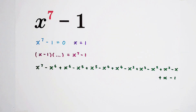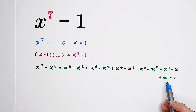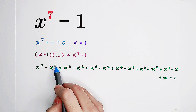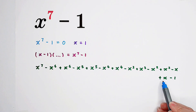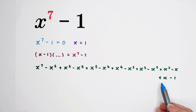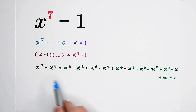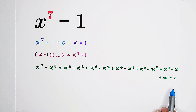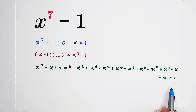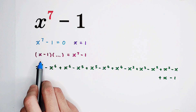Now you can see all these terms can be cancelled: minus x to the power of 6 plus x to the power of 6, minus plus minus plus, and so on. So this long expression is just equal to x to the power of 7 minus 1. But why have we written it so complicatedly? For one reason — we want to factorize it and acquire x minus 1 as a factor.